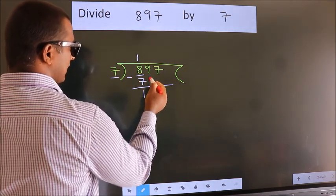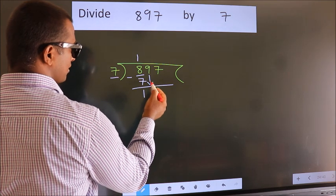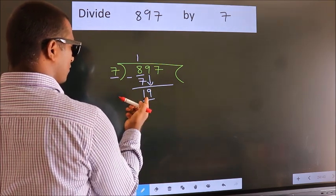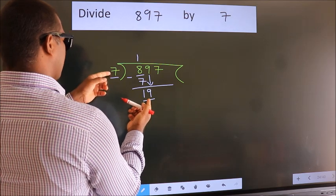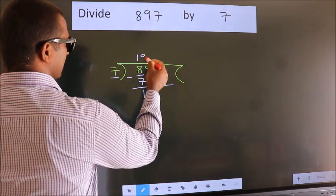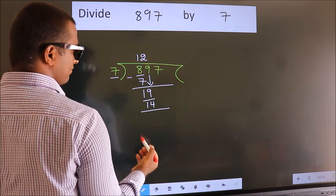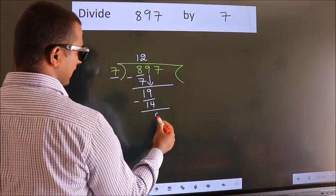After this, bring down the beside number. So 9 down. So 19. A number close to 19 in 7 table is 7 twos 14. Now we subtract. We get 5.